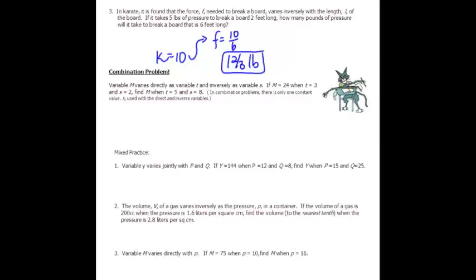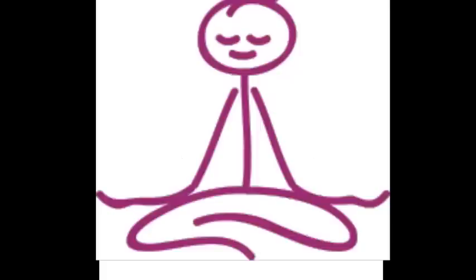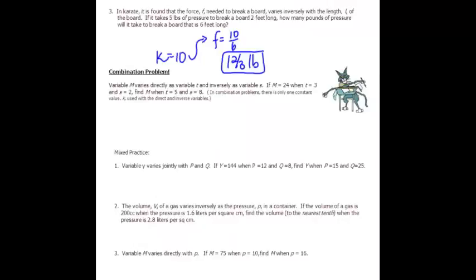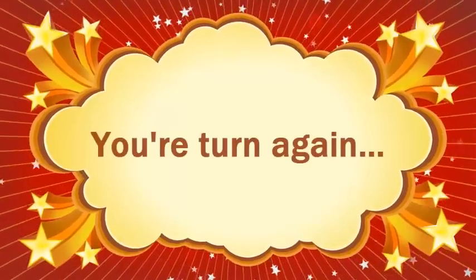Now we can have combination problems, so this is where you have to just keep calm and do what you know how to do. Variable m varies directly as variable t and inversely as variable s. If m = 24 when t = 3 and s = 2, find k. There's only one constant and we're just going to take it one step at a time. So I know it varies directly with t and inversely with s. Then I plug in, I solve for my constant and I go back and use that constant to solve for another situation. So go ahead and try that and see what you get.